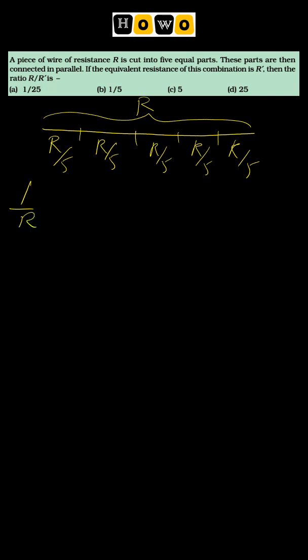Let us put the formula: 1 by R parallel is equal to 1 by R by 5 plus 1 by R by 5 plus 1 by R by 5 plus 1 by R by 5. So five times we have this value.